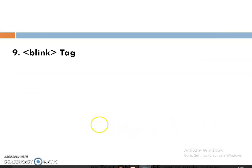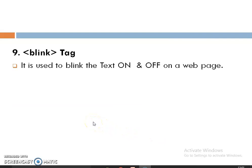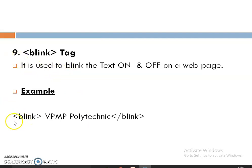The Blink tag is used to blink particular text on and off on the web page. For example, using the blink tag and passing the text 'VPMP Polytechnic' within it — the text 'VPMP Polytechnic' will blink on the screen.